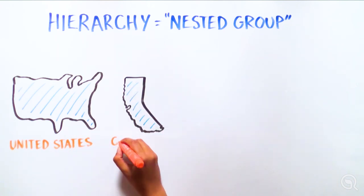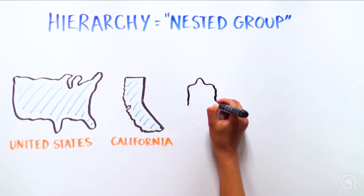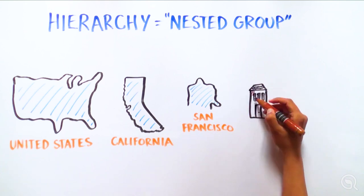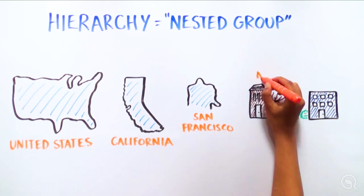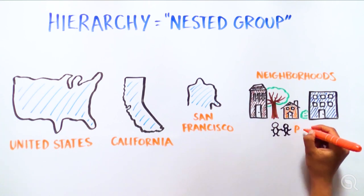For example, the United States includes California, which then contains many cities, such as San Francisco. These cities contain neighborhoods, which contain houses, and finally the people who live in those houses.